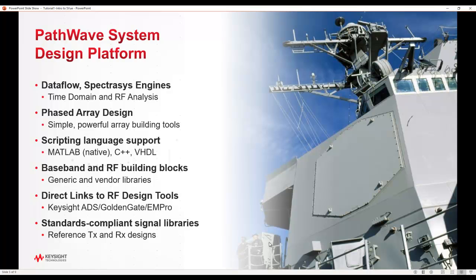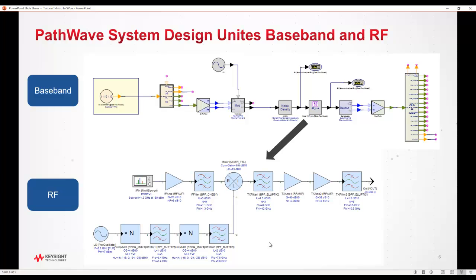It also has a direct link to RF design tools such as ADS, Golden Gate, or EM Pro to bring real RF designs into the system-level environment. There are also various standard compliance signal libraries which provide reference transmitters and receivers — for example, for 5G NR. In a nutshell, System View allows you to unite both baseband and RF under a single environment so that people can co-design and co-verify their system rather than always working in isolation.